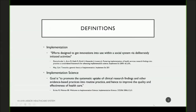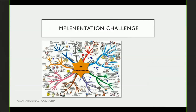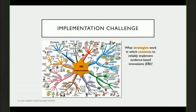Implementation is hugely challenging. It is a complex process within and of itself, being done within complex contexts. Rather than controlling features of context or ignoring them as in a typical randomized control trial, implementation science embraces these features of context and seeks to understand how they interact and shape the process of implementation. Our core question within the field is to understand what strategies work in which context to reliably implement evidence-based innovations.